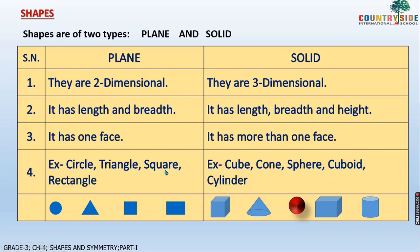Shapes are of two types: plain and solid. So how many types of shapes are there, children? Two types. First is plain and another is solid. Now what is the difference between plain and solid shape? We will see their characteristics of plain shape as well as solid shape, along with examples.